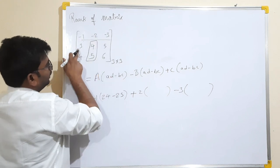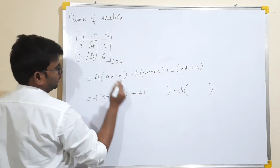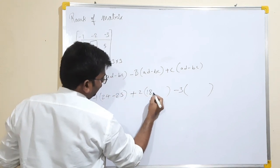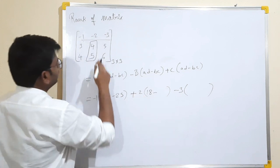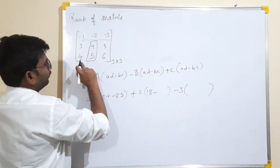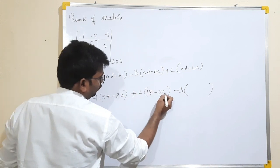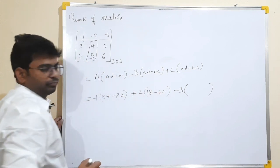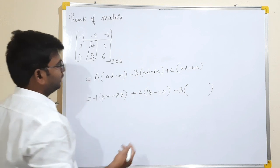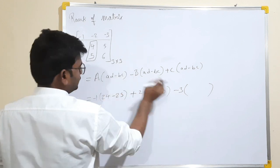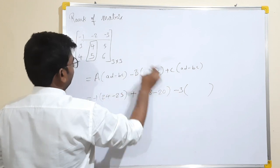6 threes are 18 minus 5 fours are 20. Next, C is not the answer.